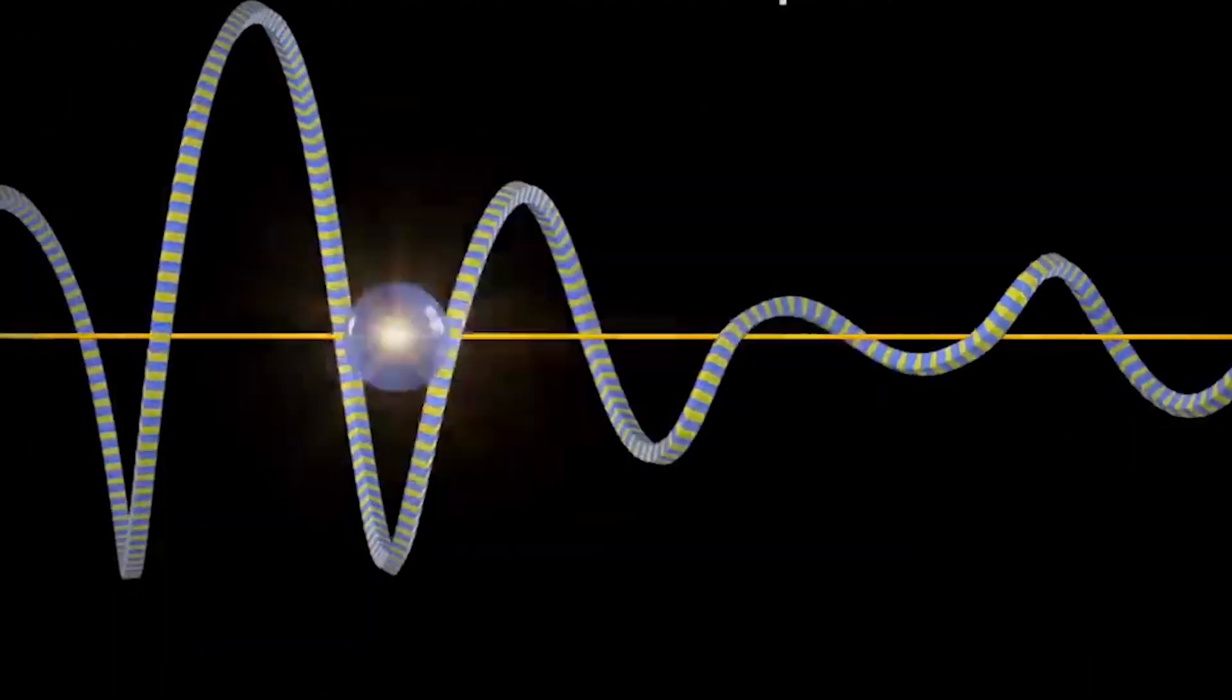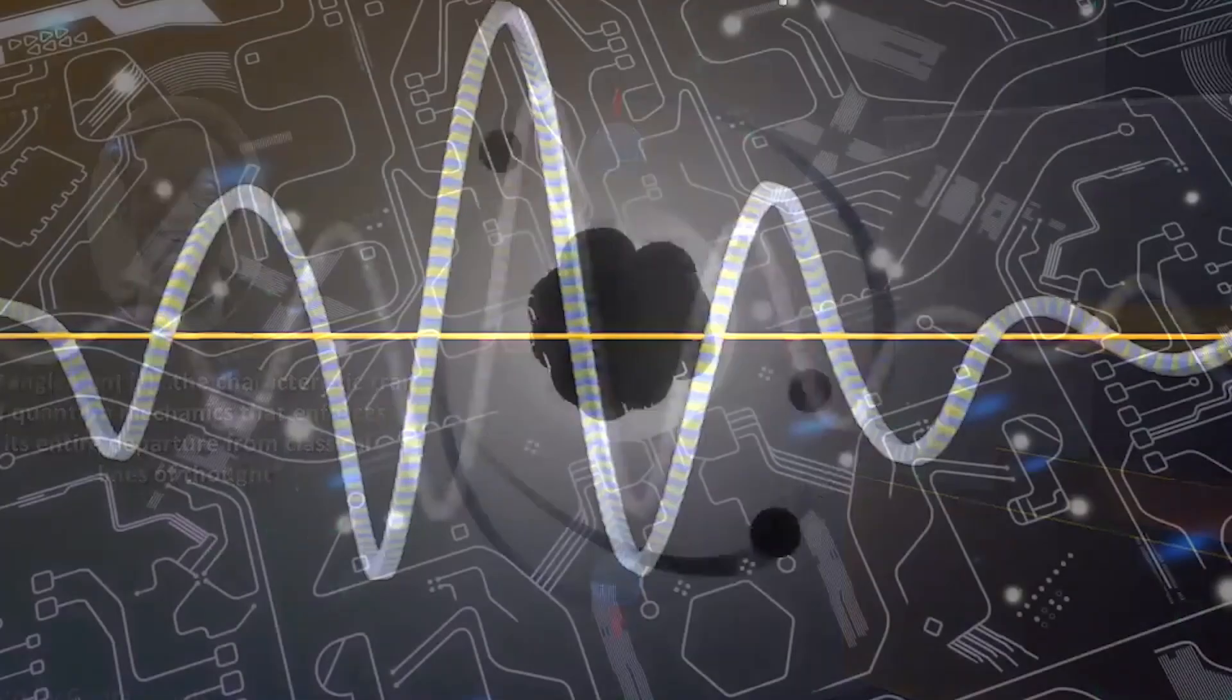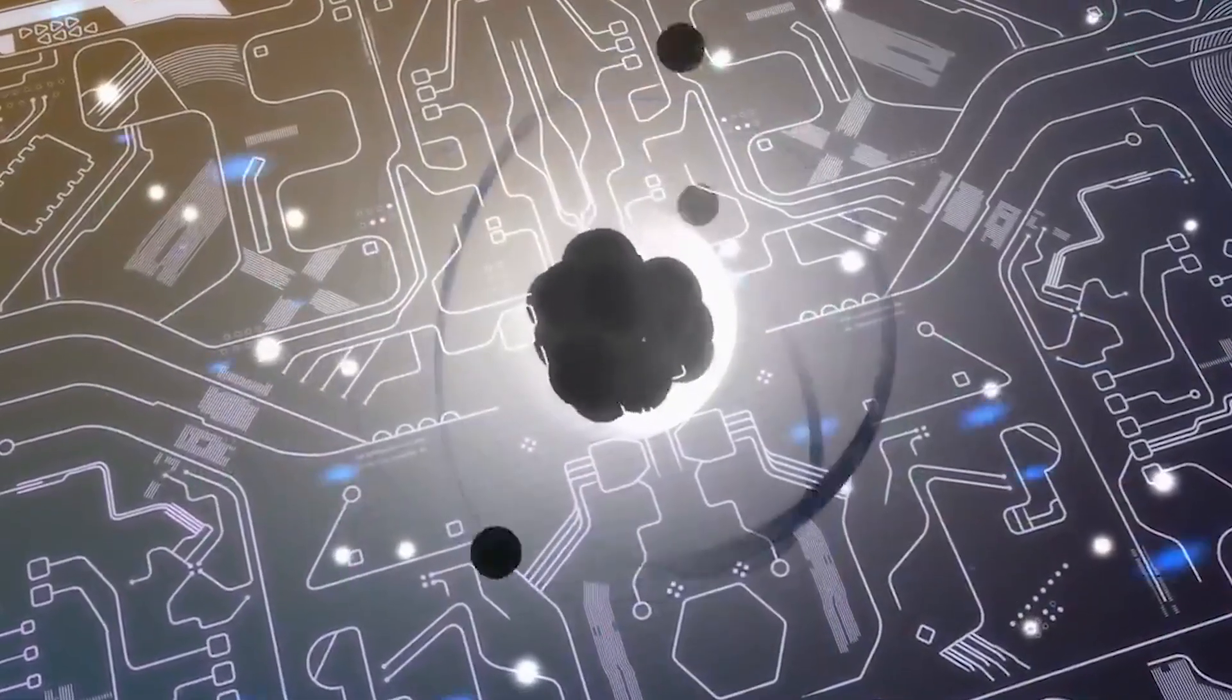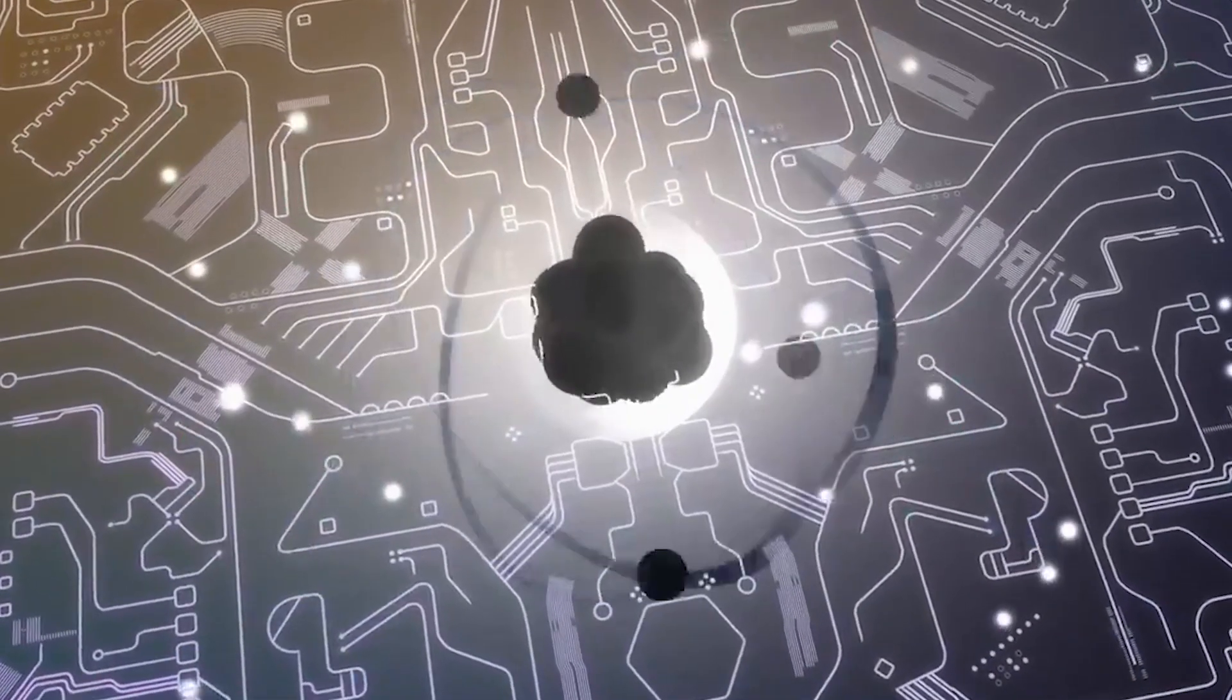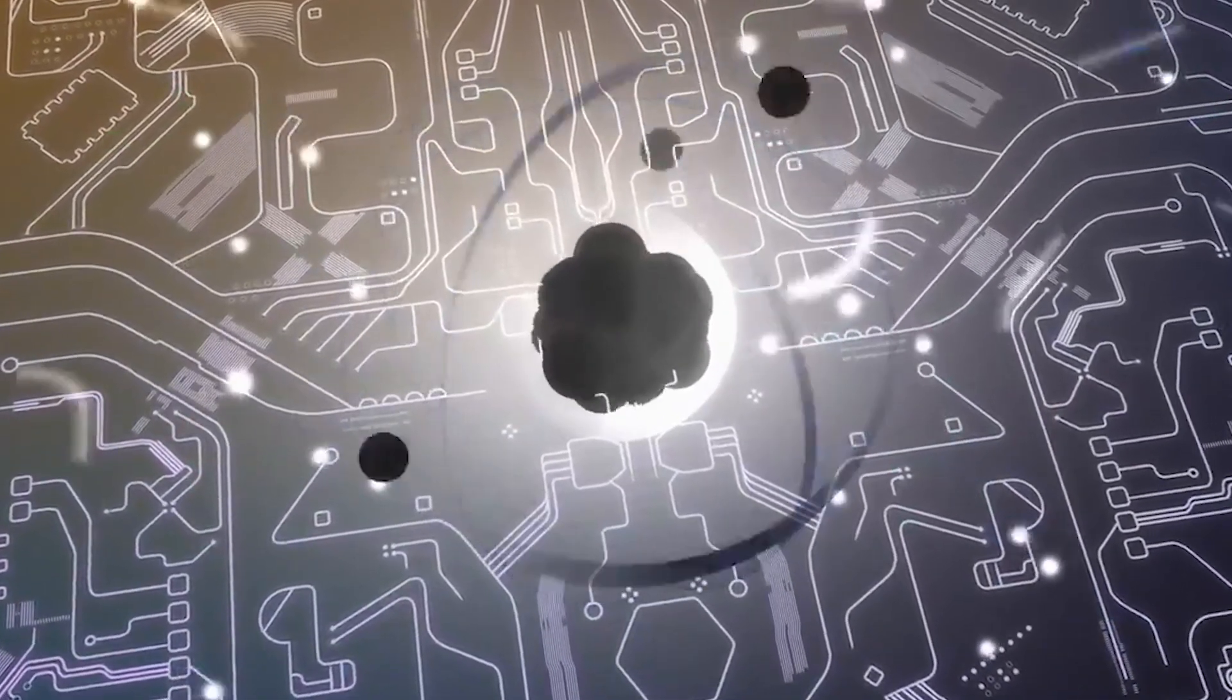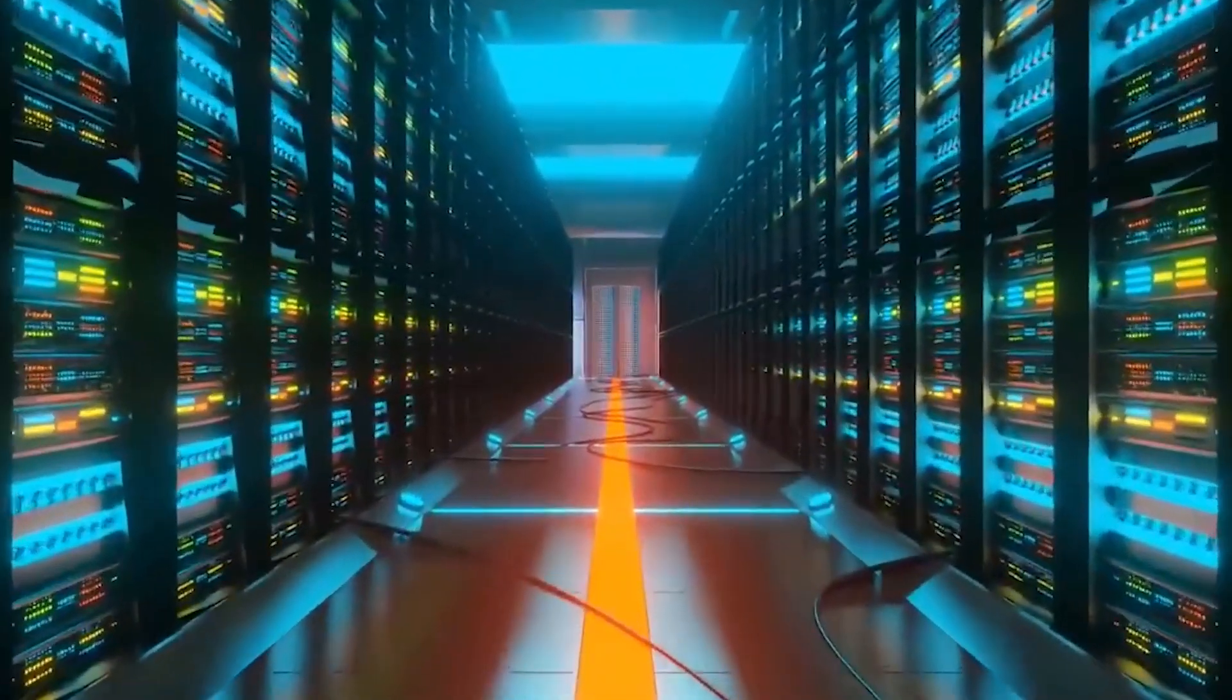Number 3. Quantum Entanglement. Quantum entanglement, a bizarre and mind-boggling phenomenon in the world of quantum mechanics, refers to the intimate connection between two particles where their states become intrinsically linked. Remarkably, the properties of entangled particles are instantly correlated regardless of the distance separating them, defying the classical understanding of space and time. Even if these particles are light-years apart, a change in one particle's state will instantaneously affect the other, a concept famously referred to as spooky action at a distance.